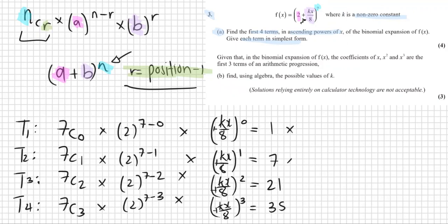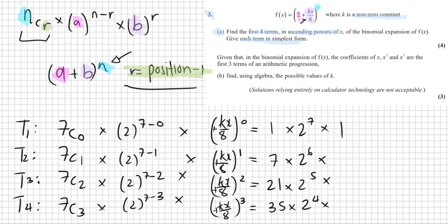Let me deal with the second part all at once. 2 to the power of 7 minus 0 is just 2 to the power of 7. The next one is 2 to the power of 6, getting one lower each time. Now be a little bit careful here: kx over 8 to the power of 0 is 1, kx over 8 to the power of 1 is itself. Don't forget that when squared it becomes k squared x squared — a lot of students make mistakes here, forgetting that the 8 also gets squared.